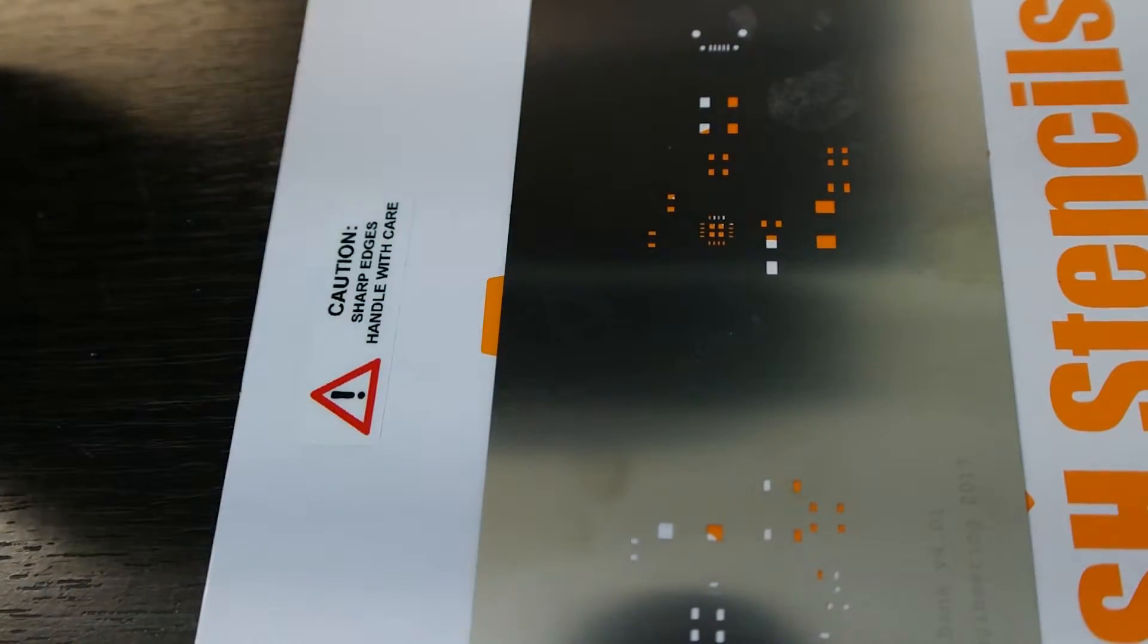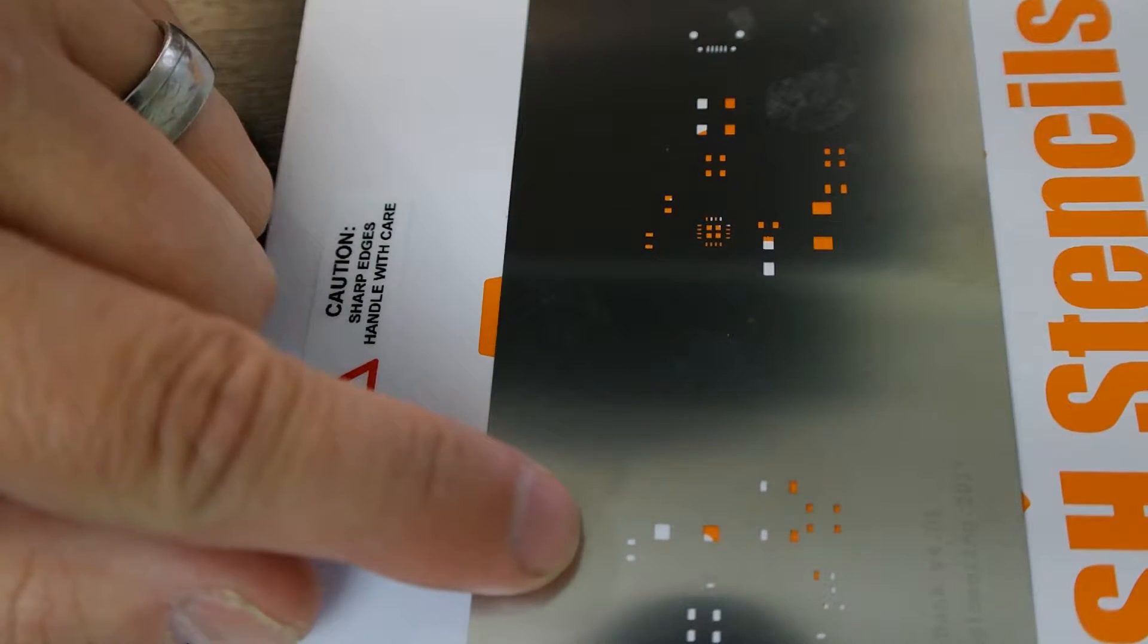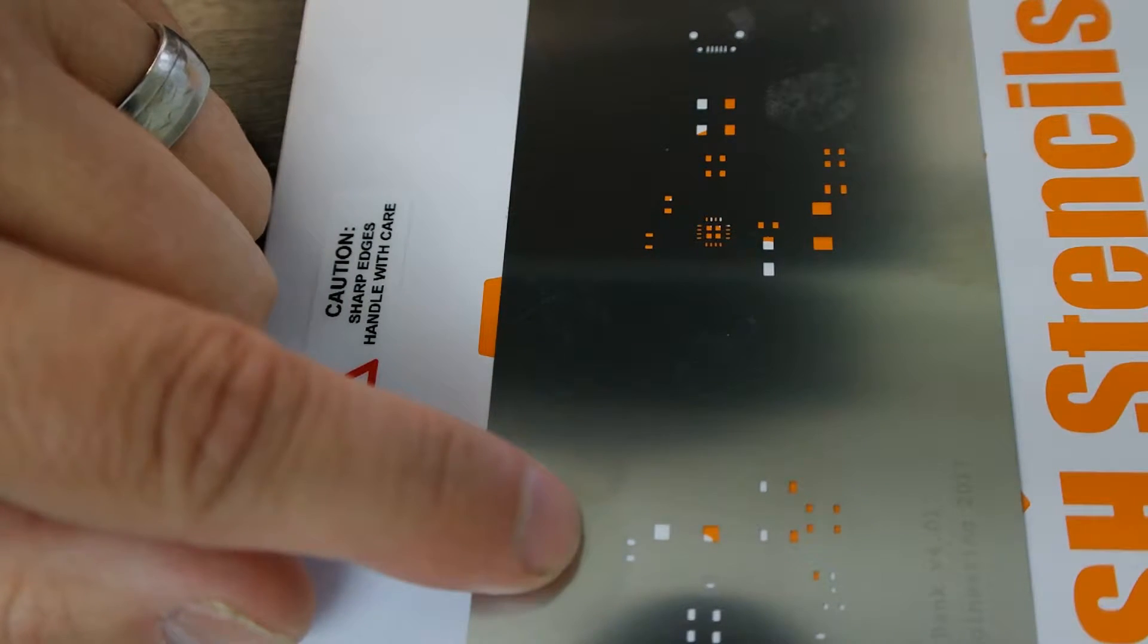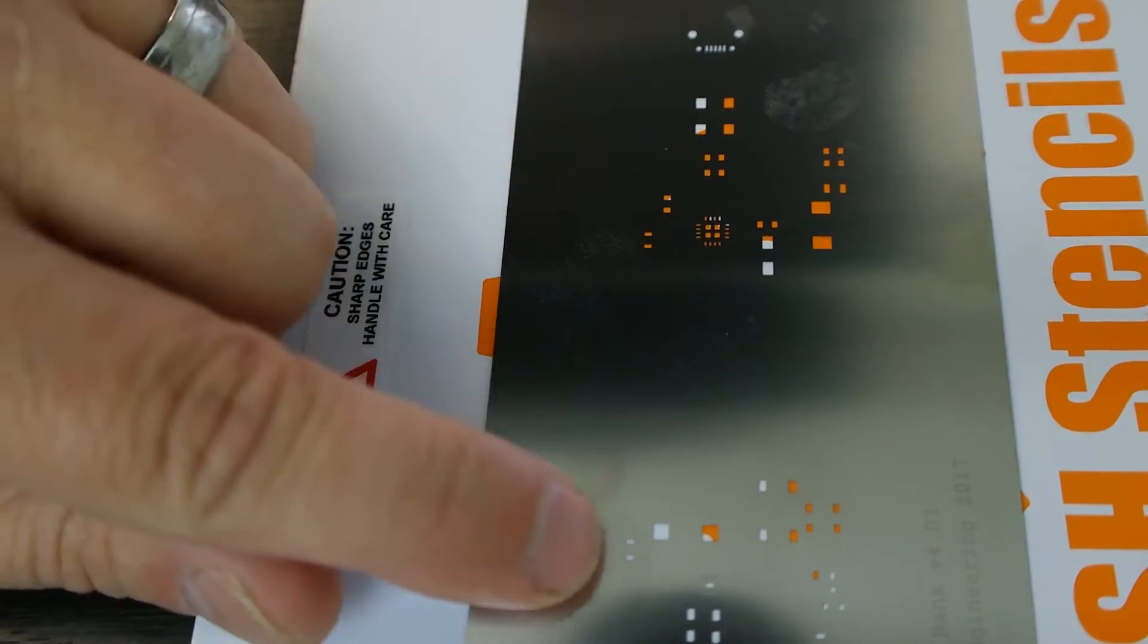This is as close as I can get without my camera going out of focus. I don't have a macro lens so this will have to do, but we're going to compare the quality of the holes between the kapton and the stainless steel.